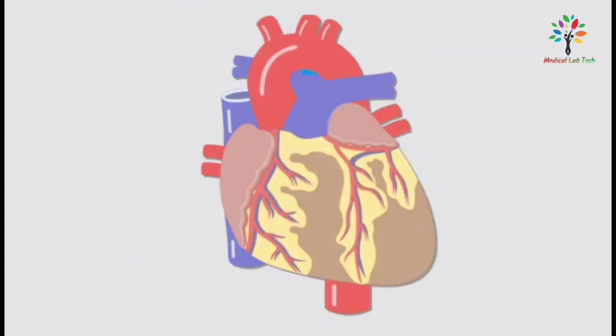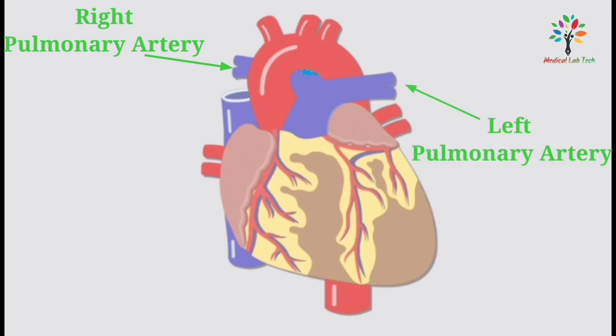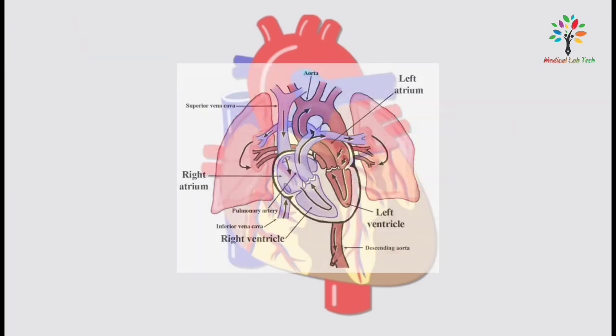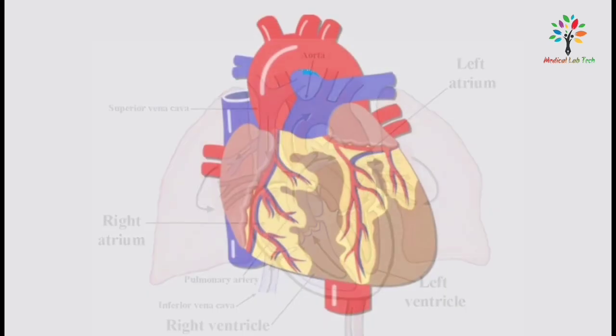Next, I am going to talk about the pulmonary artery. The pulmonary artery starts from the right ventricle and forms two branches: the right pulmonary artery and the left pulmonary artery. The right pulmonary artery is connected with the right lung and the left pulmonary artery is connected with the left lung. Both pulmonary arteries carry deoxygenated blood to the lungs.